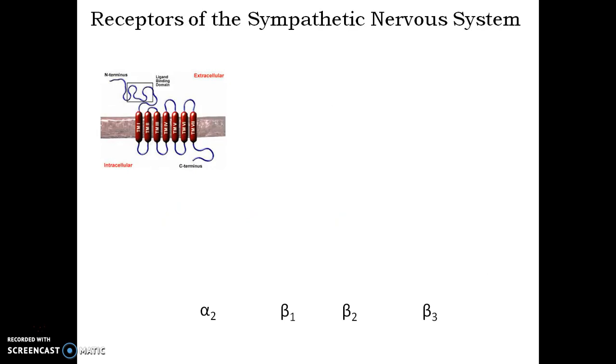The protein structures of receptors differ in their amino acid sequences and hence are classified into several isoforms. They are alpha-1, alpha-2, beta-1, beta-2 and beta-3.